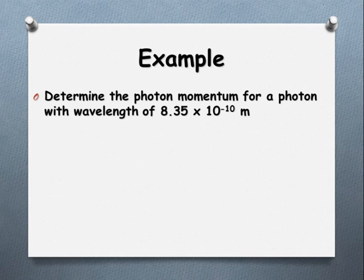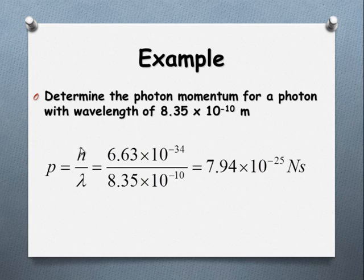So let's have a quick look at an example here. We've got a wavelength of 8.35 times 10 to the negative 10 meters for a photon. We're asked to determine the momentum. So P equals H over lambda. We've got H as 6.63 times 10 to the negative 34 over the wavelength. We've got 7.94 times 10 to the negative 25 newton seconds.